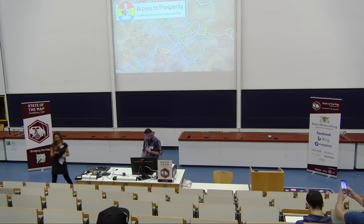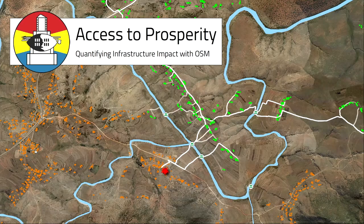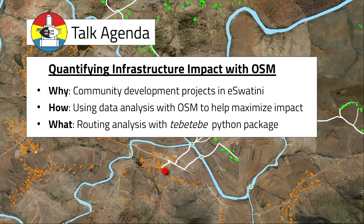Thank you for the introduction, Melanie. My name is David Lovin and today I'm going to talk about quantifying infrastructure impact with OpenStreetMap. My agenda: I'll talk about community development projects in Eswatini, how we use data analysis and OpenStreetMap to maximize impact, and a Python package I've written to help quantify infrastructure impact and how you can use it yourself.